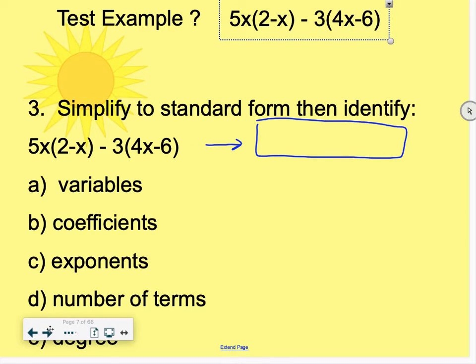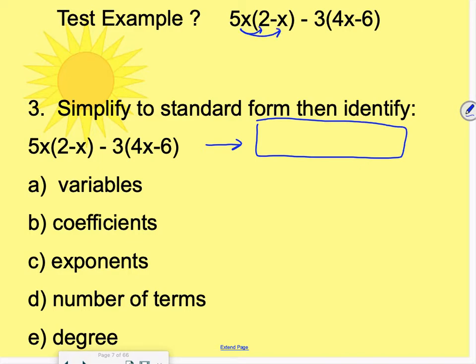Moving into number three, this one's getting a little more at the meets category for target one. So can you take an expression and simplify it and then identify the different parts of the polynomial? So to simplify this, the first thing you're going to have to do is take parentheses away using the distributive property.